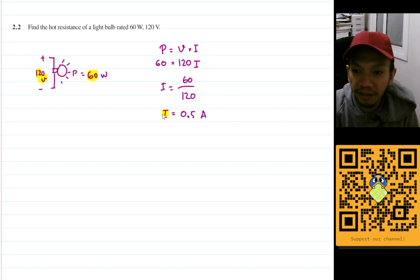This is the I, but we are not looking for I. Remember that we need to look for the hot resistance of this light bulb, that means we need to find R. By using Ohm's law, we know that the voltage will be the current multiplied by the resistance, right? We know the voltage, we know the current.